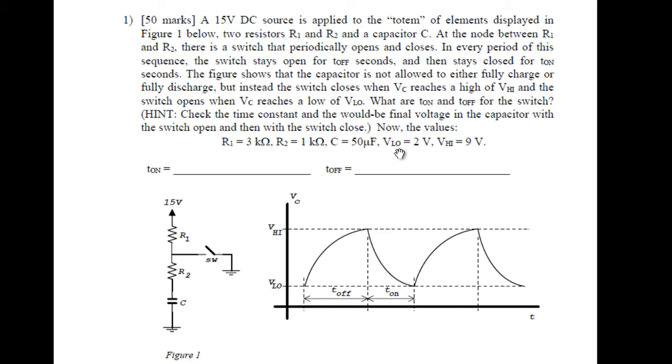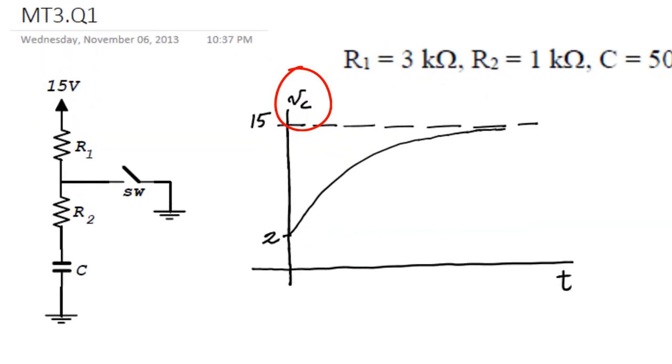The lowest voltage in the capacitor is 2V, this one here, and the highest one is 9V. During the charge of the capacitor, the voltage starts at 2V in the capacitor, and it climbs up, trying to reach VTH, which is 15V when the switch is open. The time constant will be the product of R1 plus R2 times C, and that is 3000 plus 1000 times 50. That time constant is 0.2 seconds.